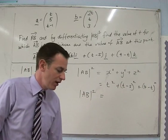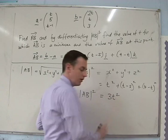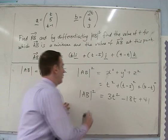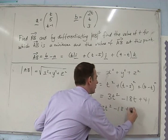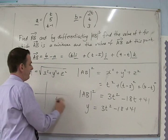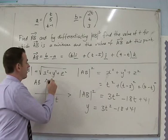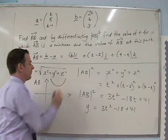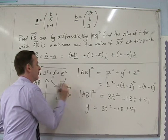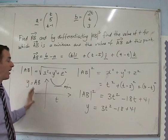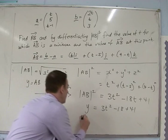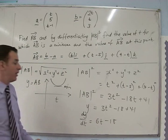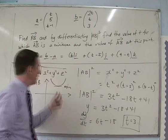Multiplying out the brackets and simplifying, we end up with AB squared equal to 3t squared minus 18t plus 41. If we call AB squared equal to y, we have a graph where as t changes, AB changes — the two points come closer together, reach a minimum, then expand apart. Differentiating: dy/dt equals 6t minus 18. The minimum occurs when dy/dt equals 0, so t equals 3.